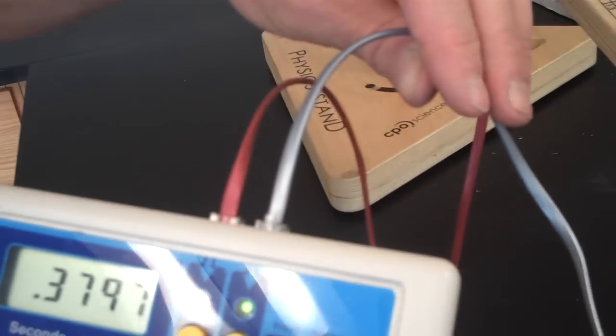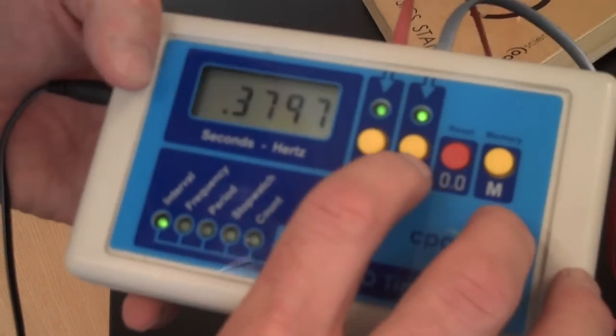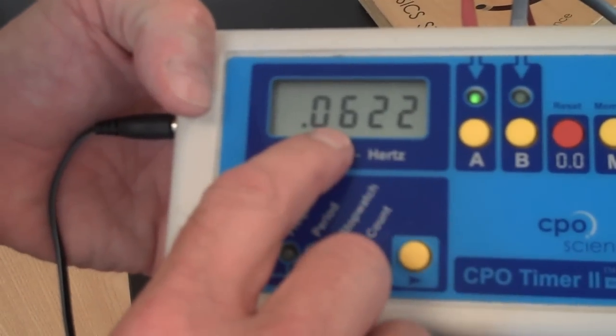And photo gate B, which is the bottom gate, which has been hooked up to the blue phone jack. And you'll see how A and B correspond to A and B on the timer. I'm going to toggle B off. This is the time that it took the car to go through photo gate A.